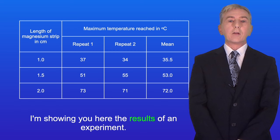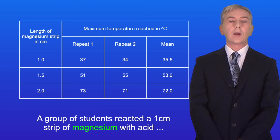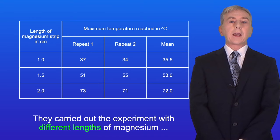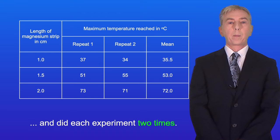I'm showing you here the results of an experiment. A group of students reacted a one centimeter strip of magnesium with acid and measured the highest temperature reached in the reaction. They carried out the experiment with different lengths of magnesium and did each experiment two times. The students then calculated mean values.